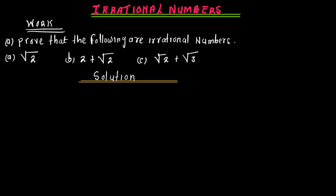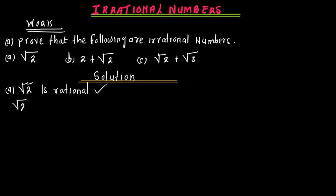For the first question, instead of saying root of two is irrational, we are going to make an argument by simply saying root of two is rational. This is the argument. Now if root of two is rational, then it simply means it can be expressed in the form a over b, where b must not equal zero, because when b equals zero it becomes undefined.